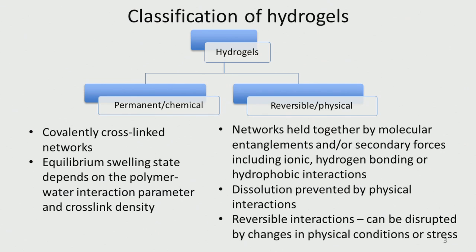The classification of hydrogels: we have permanent chemical bonding or reversible physical bonding. When there is physical bonding it is reversible — the material can be a hydrogel by adding water or it can give up all the water. Chemical bonding could be covalent cross-linking; equilibrium swelling depends on polymer-water interaction and cross-link density. Physical networks are made up of molecular entanglement or secondary forces like ionic forces, hydrogen bond forces, and hydrophobic interactions. Dissolution is prevented because of this, and these are all very reversible.